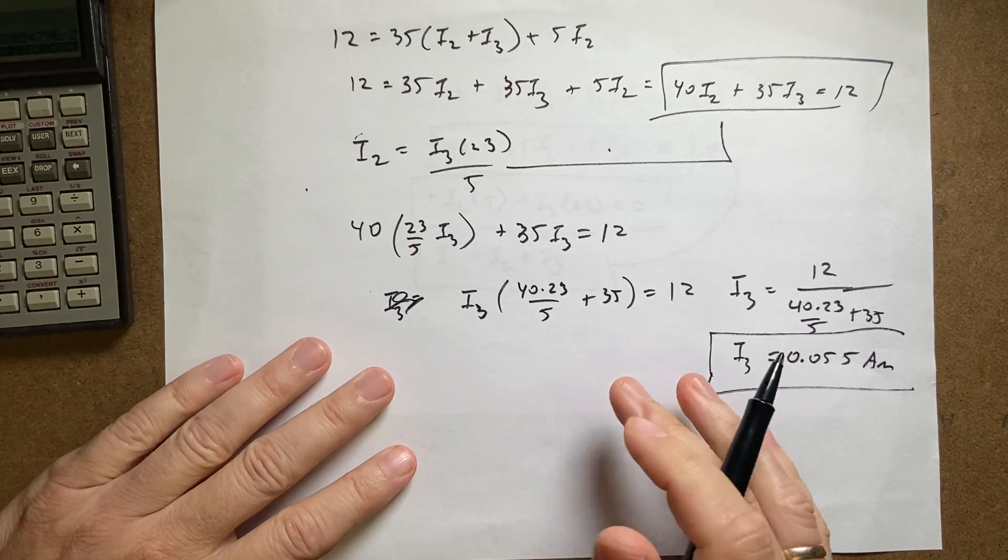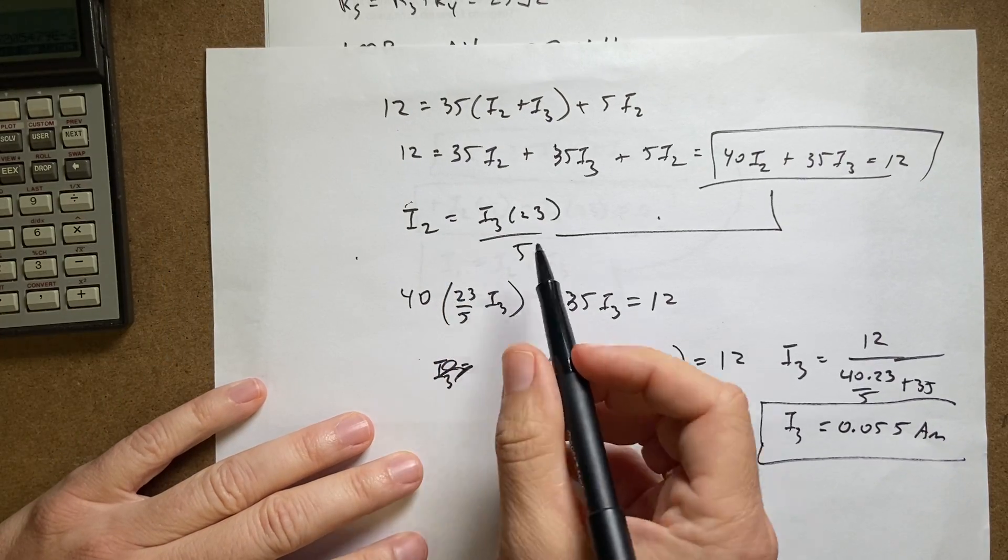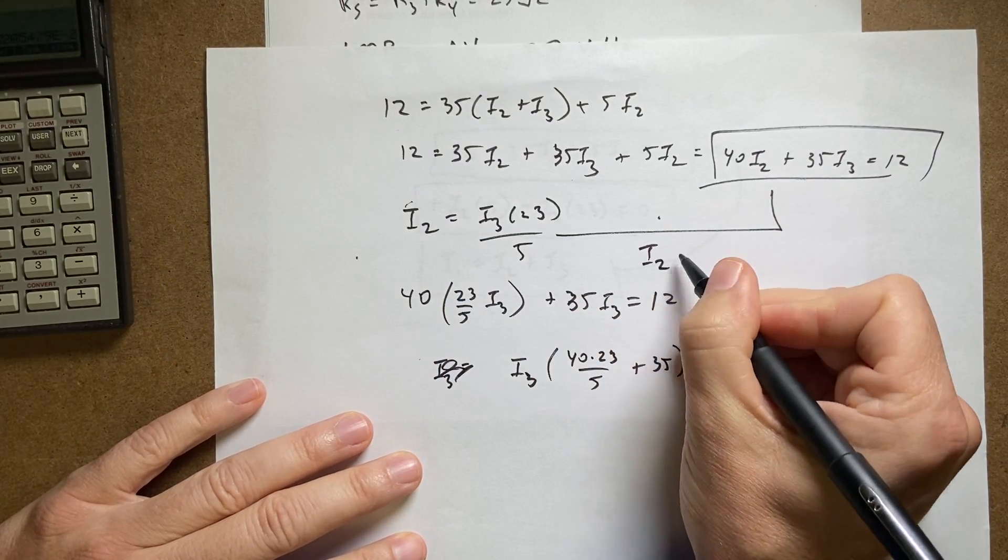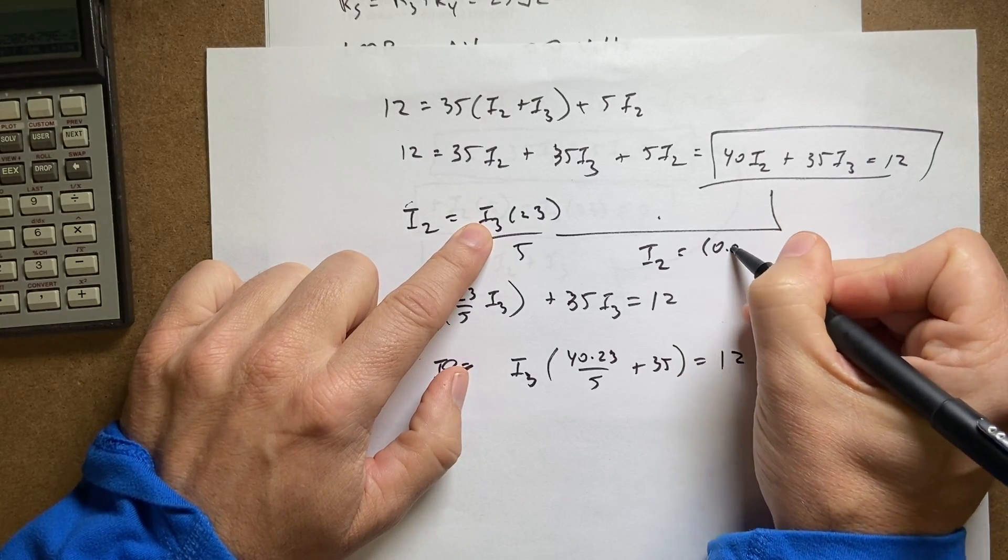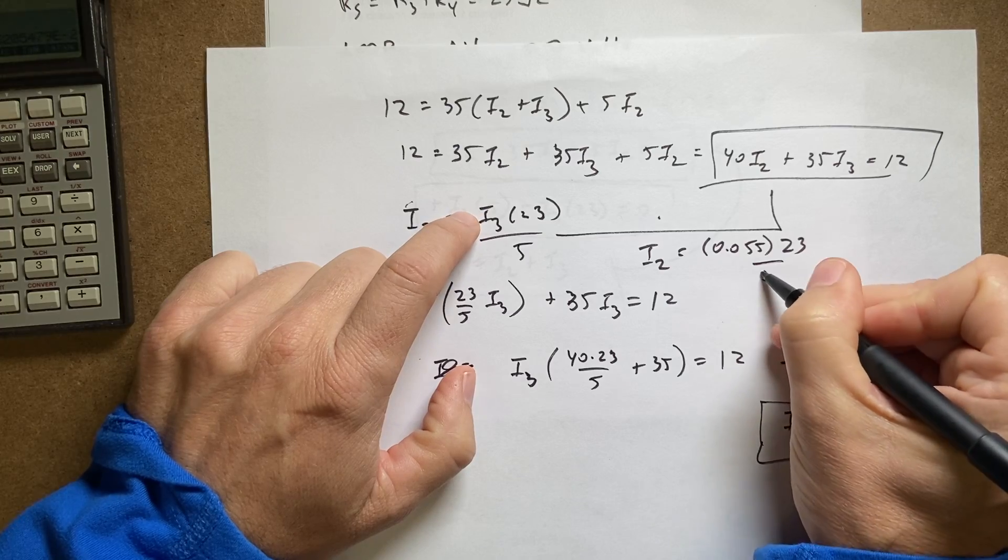Now I can work backwards. I already have an expression for i2 right here, so i2 is going to be equal to i3, 0.055 times 23 over 5.